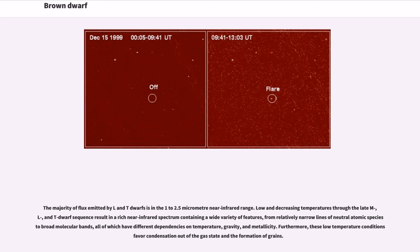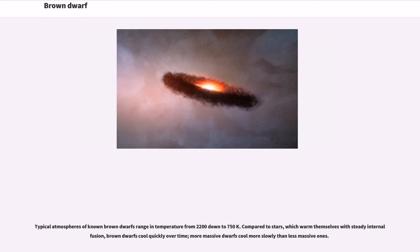The majority of flux emitted by L and T dwarfs is in the 1 to 2.5 micrometer near-infrared range. Low and decreasing temperatures through the late M, L, and T dwarf sequence result in a rich near-infrared spectrum containing a wide variety of features from relatively narrow lines of neutral atomic species to broad molecular bands, all of which have different dependencies on temperature, gravity, and metallicity. Furthermore, these low temperature conditions favor condensation out of the gas state and the formation of grains. Typical atmospheres of known brown dwarfs range in temperature from 2200 down to 750 K.